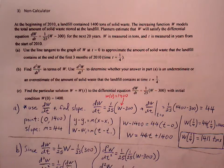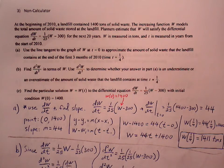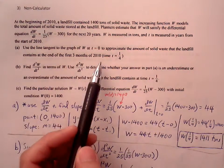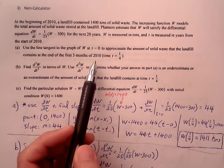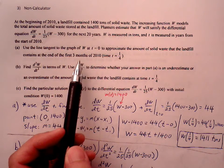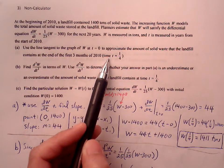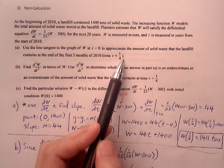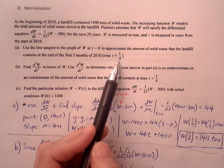Part A says use the line tangent to the graph of W at t equals 0 to approximate the amount of waste that the landfill contains at the end of the first three months. So t is one fourth, so this is a quarter of the year.